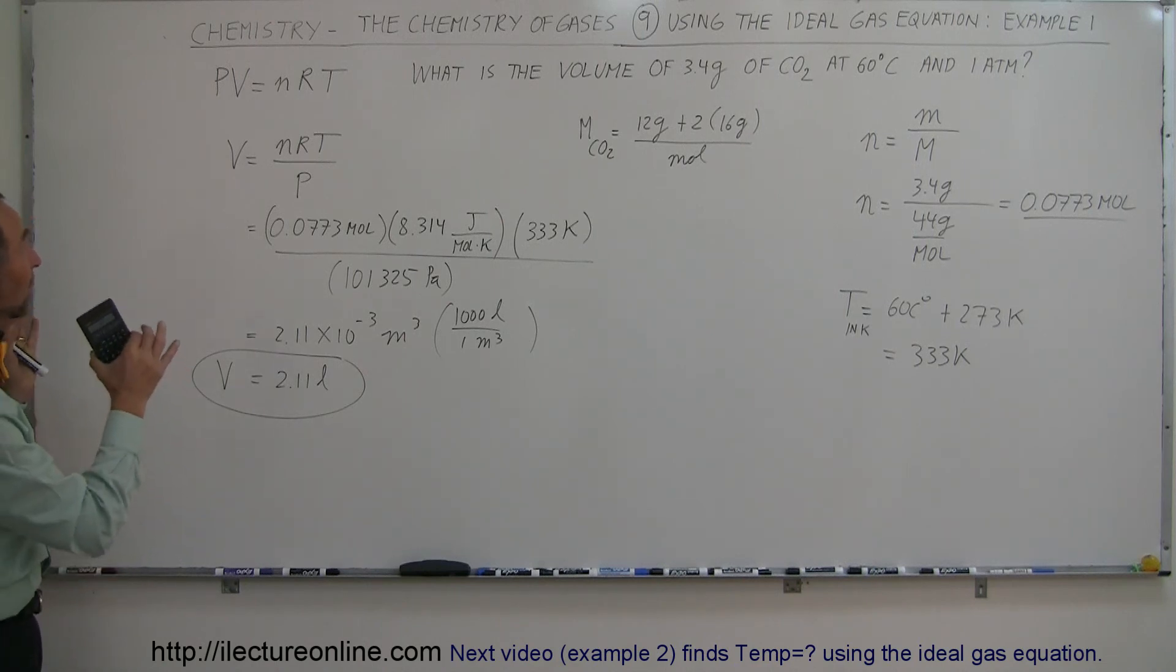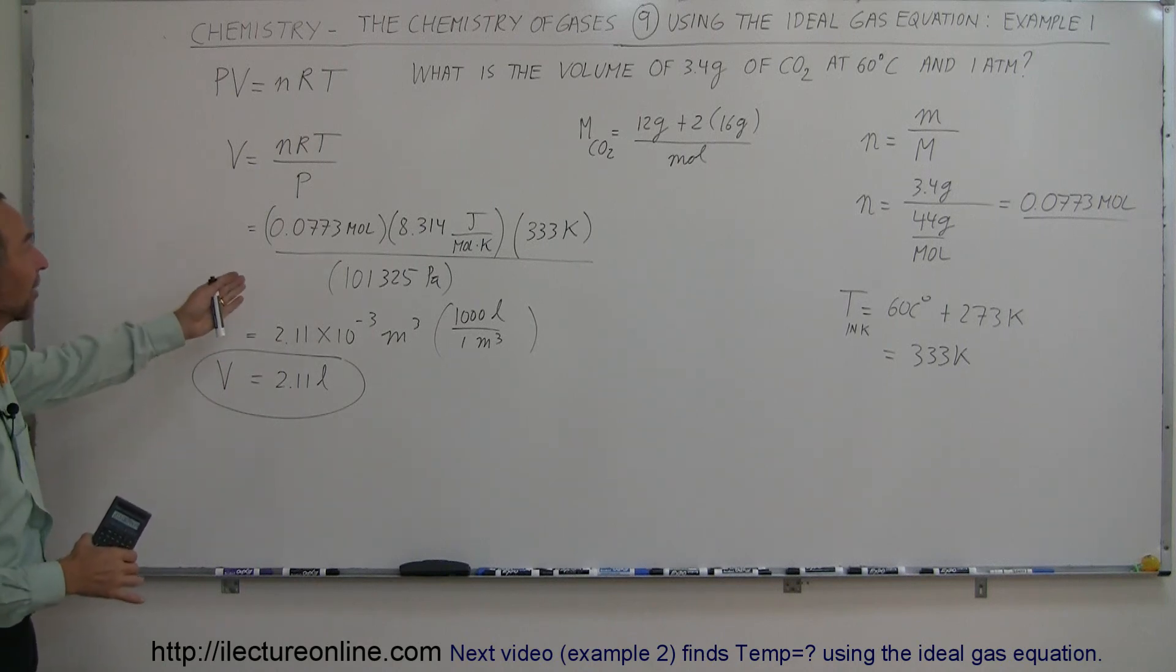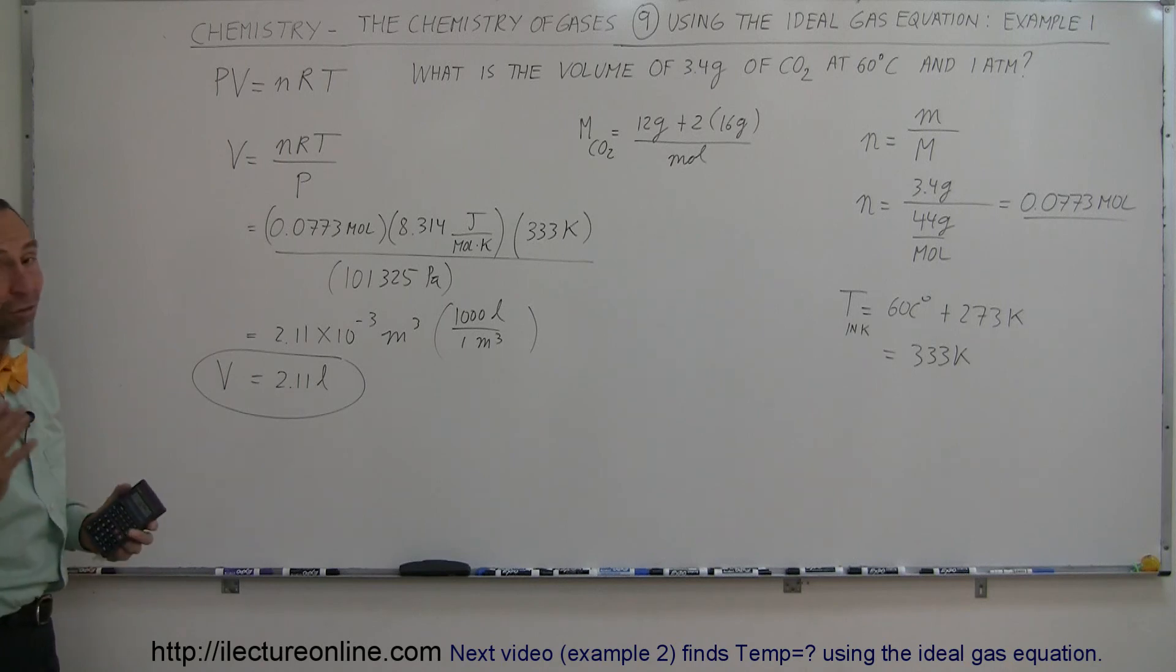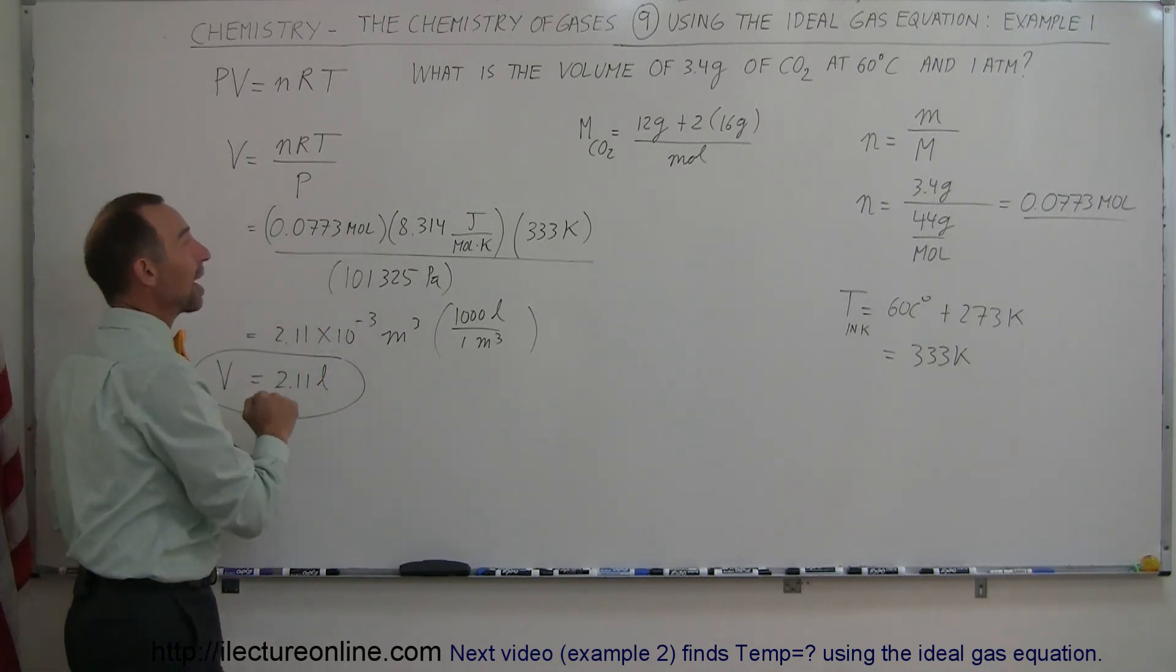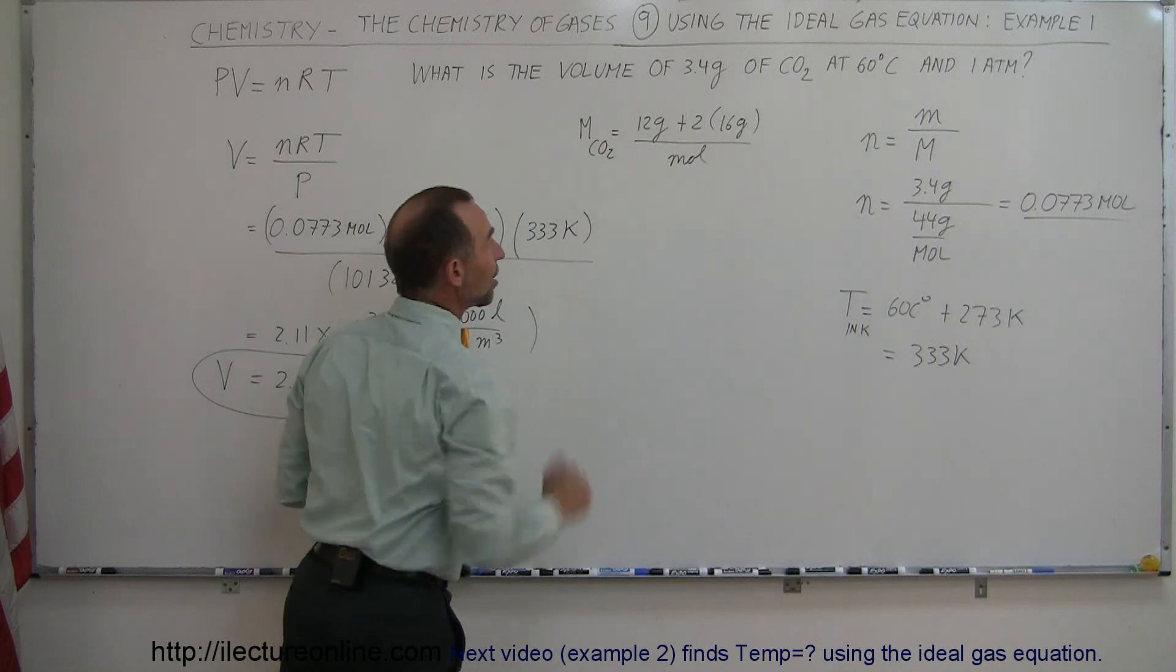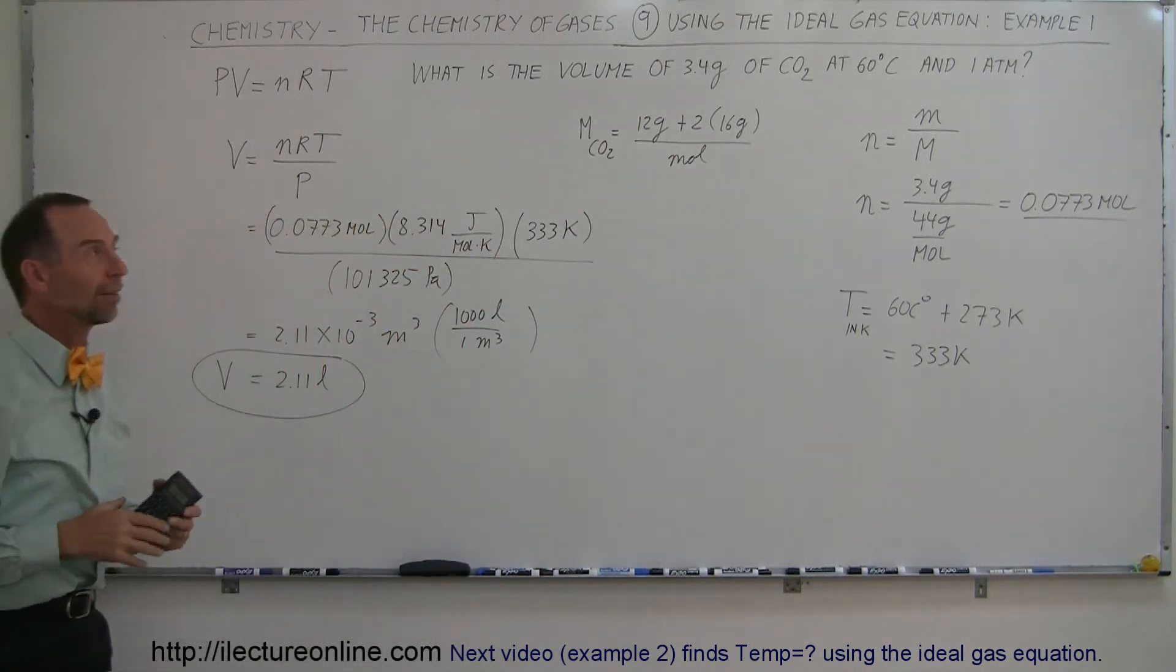So, that's how we use the ideal gas equation to come up with the volume of a gas at a particular temperature, at a particular pressure. And sometimes they give you the gas, not in how many moles of the gas you have, but in terms of how many grams, and you'll have to convert to moles first. And that's how we do that.